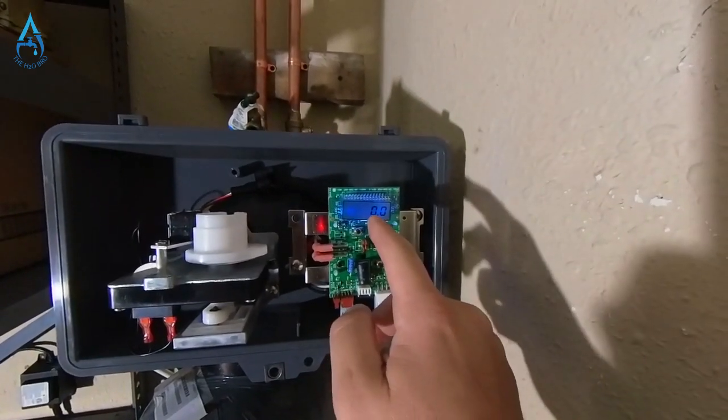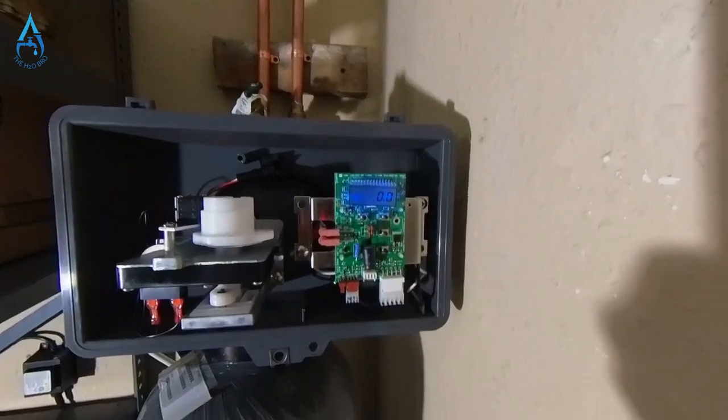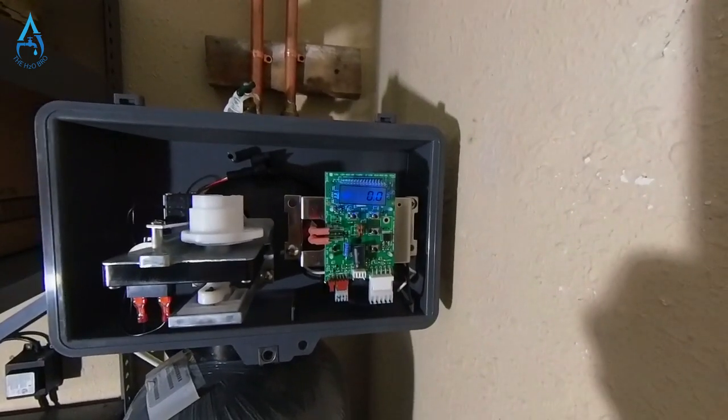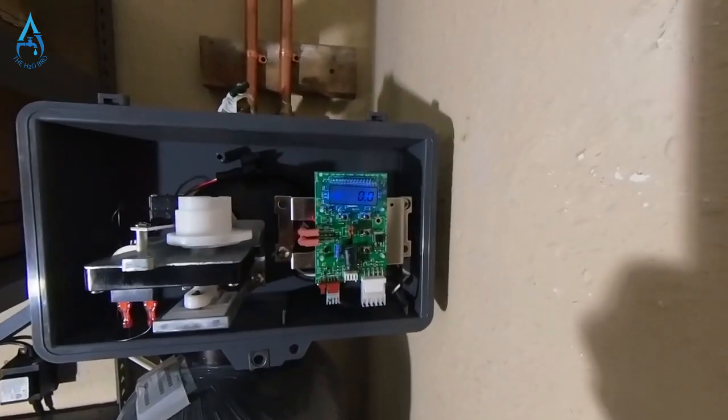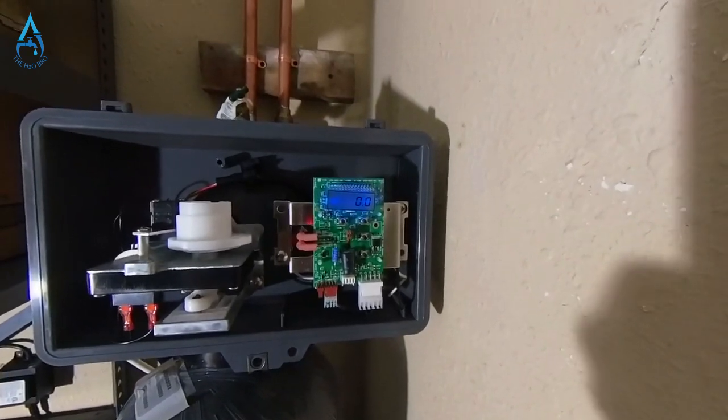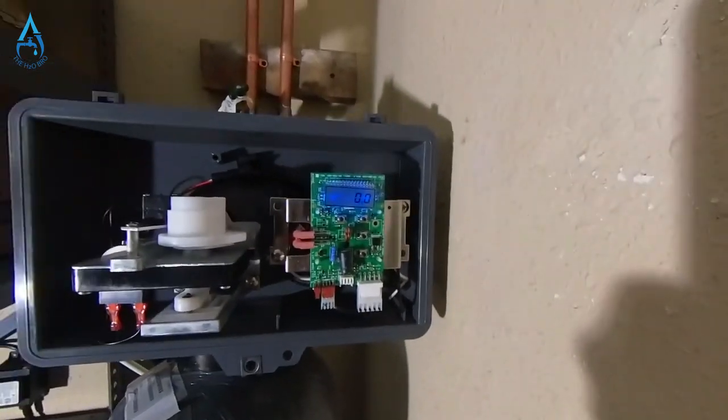When you turn on a faucet inside the house, you're going to see that the number is going to start counting your water usage. This is the number one key factor to make sure that it's counting your water so that you get soft water.